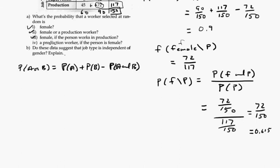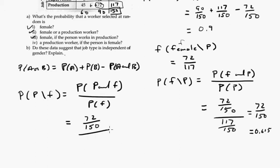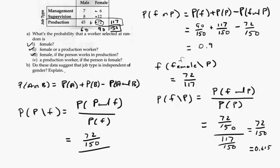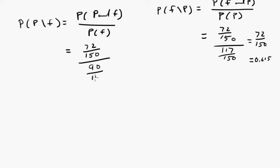So now they want to know, what's the probability if you're a production worker given you're female? That's the probability of production and female, divided by the probability of female. Same thing as before, in terms of the formula, we are going to get 72 over 150, and the probability of female is 90 out of 150. So that's going to be 72 out of 90, and that is 0.8.